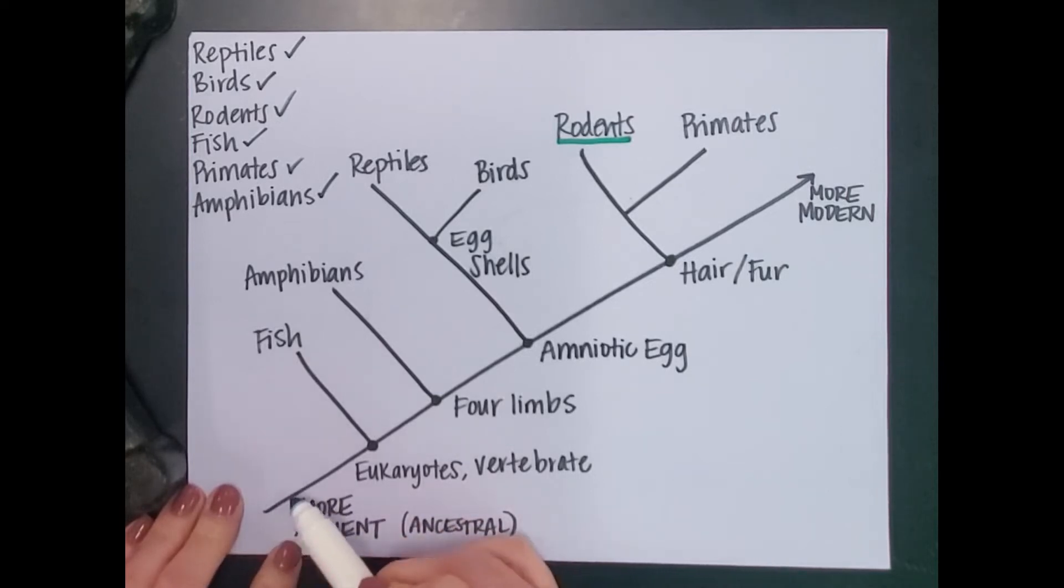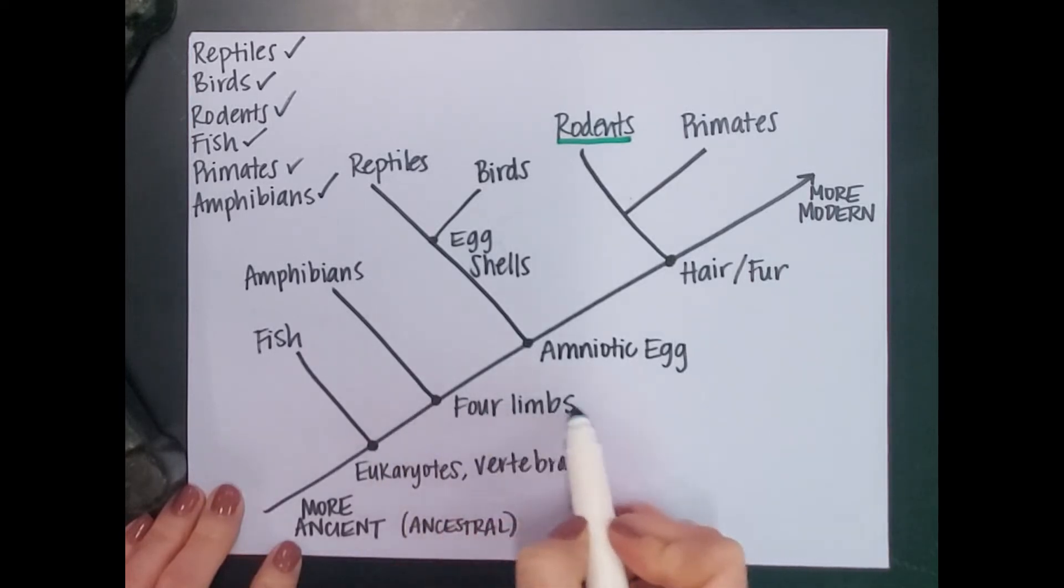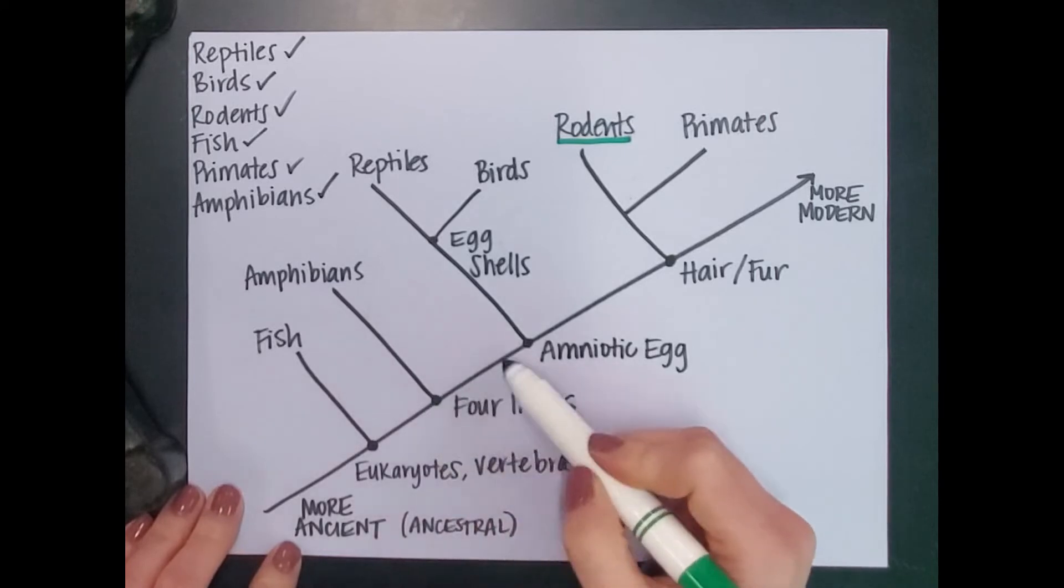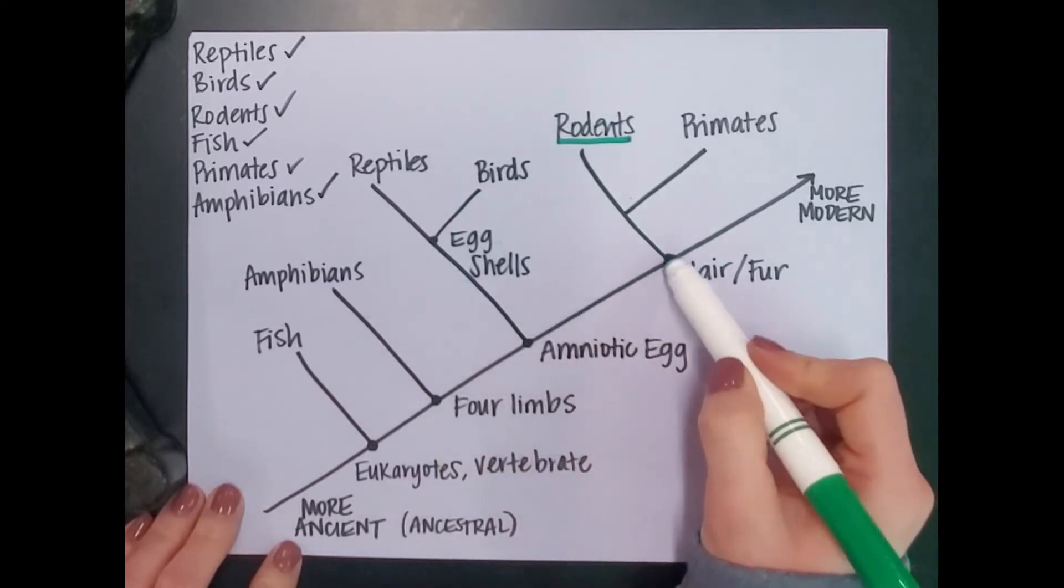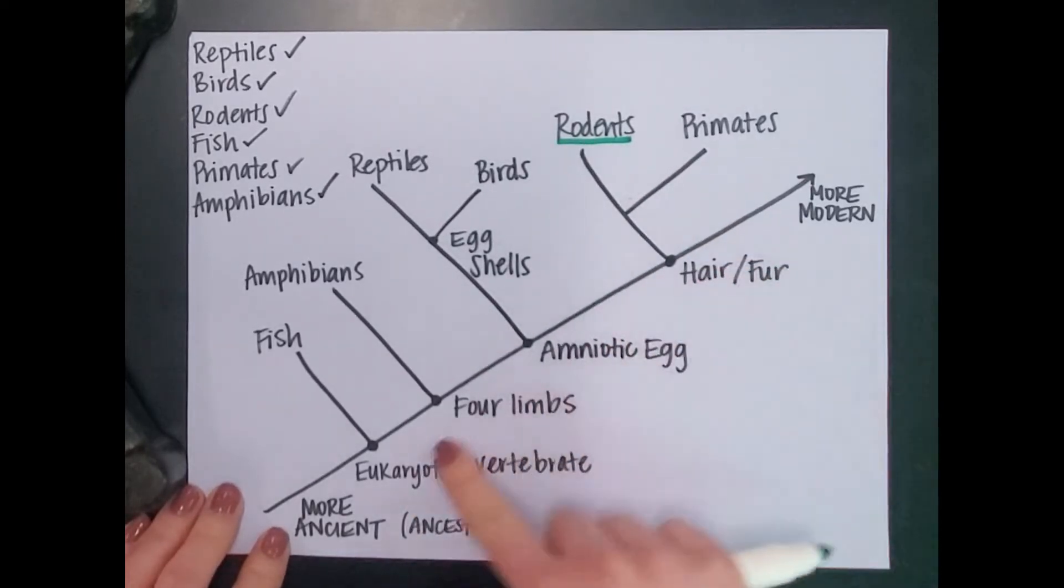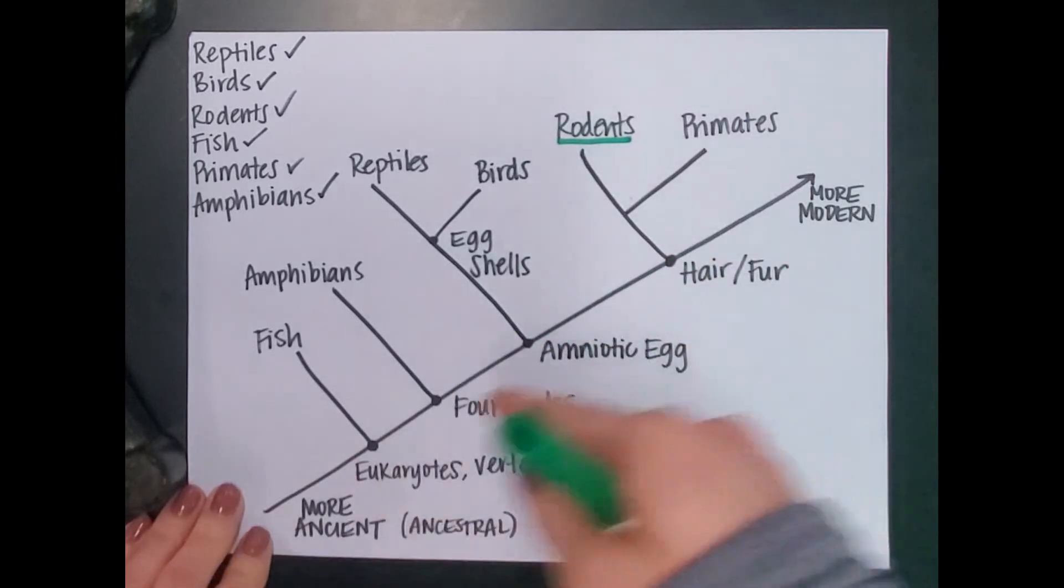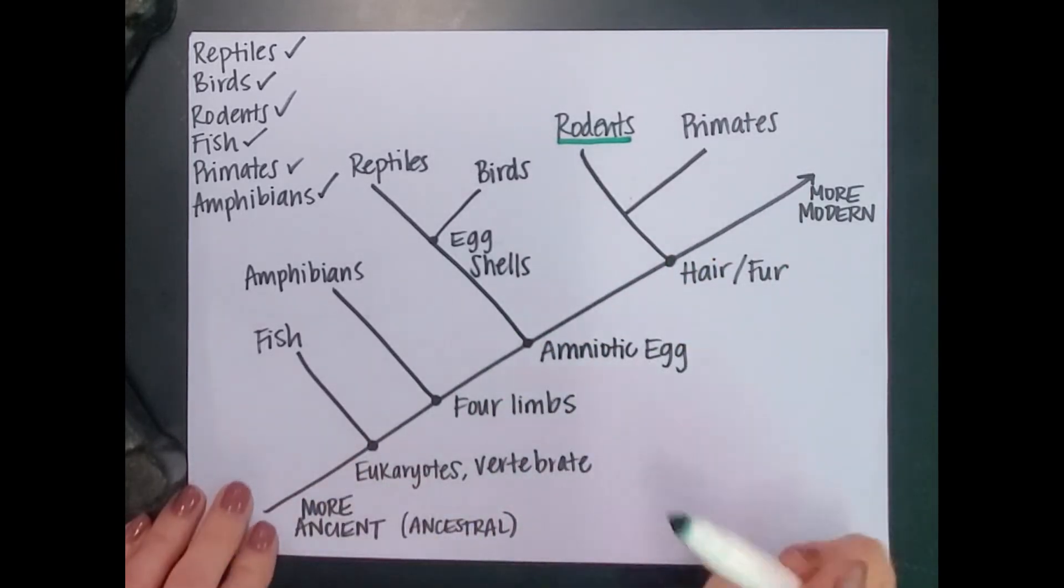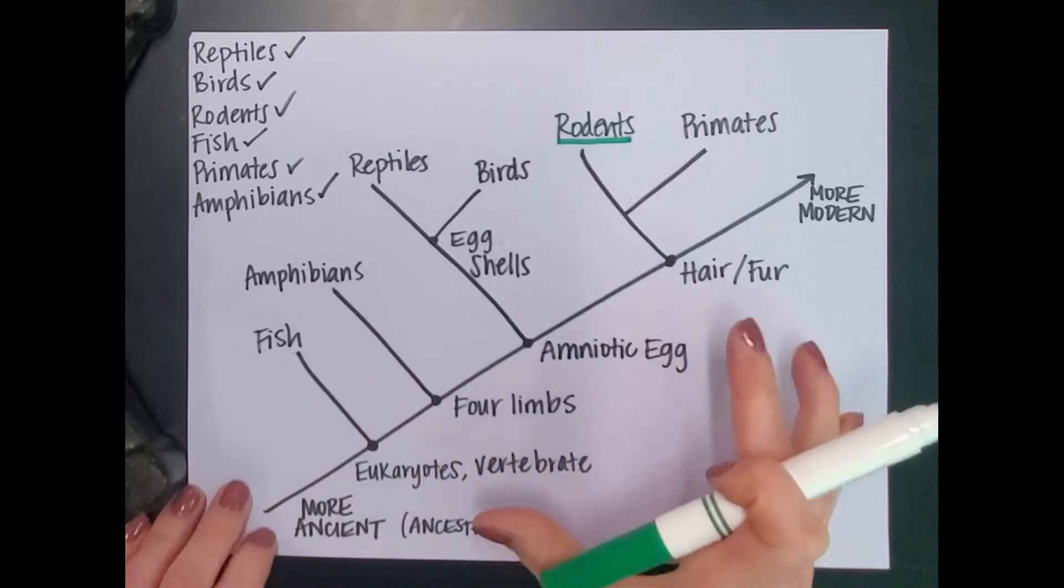So if I start at the bottom, rodents are eukaryotes. They have vertebrae. That's correct. They have four limbs. Yes, they do. They have amniotic eggs. Yes, they do. And they have hair or fur. So rodents have all of these characteristics going backwards on the timeline here. That's how you figure out what they have in common.